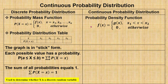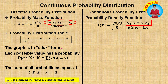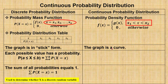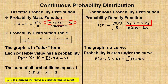The difference between these two mathematical functions is that for discrete probability distribution, the possible values of x are listed one by one, whereas in continuous probability distribution, x is given in interval form. For the graph, discrete probability distribution is in stick form, whereas for continuous probability distribution, the graph is a curve. For discrete probability distribution, each possible value has a probability, so to find the probability between a and b, we sum the probabilities from a to b. For continuous probability distribution, the probability is the area under the curve.